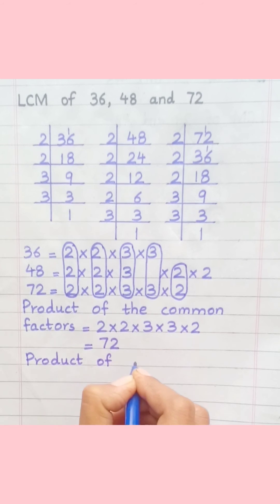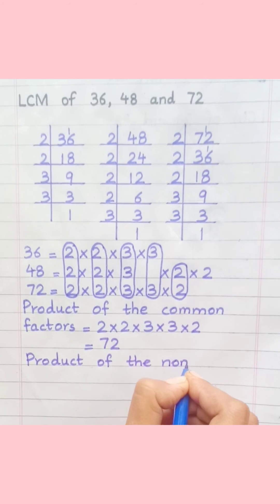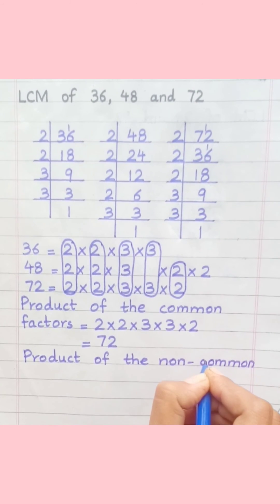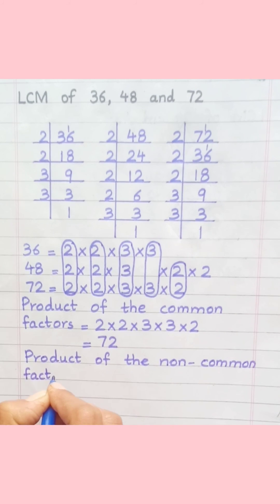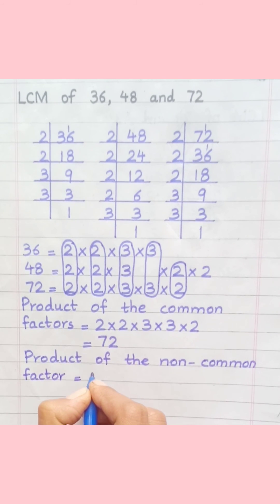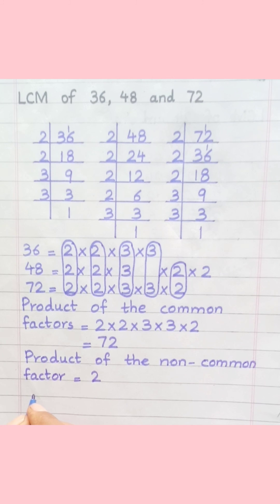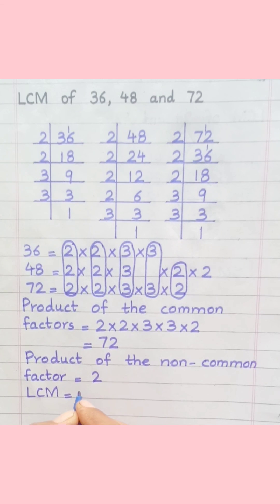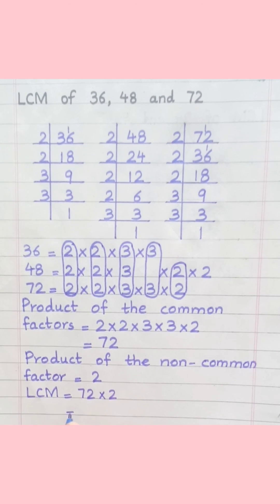Product of the non-common factor equals 2. LCM equals 72 multiply 2, equal 144.